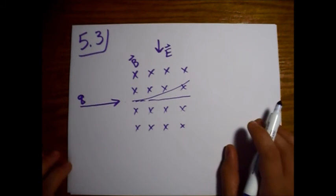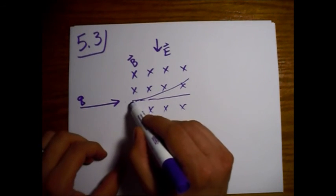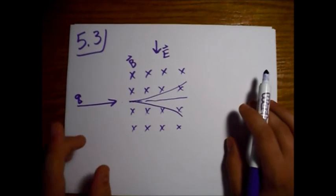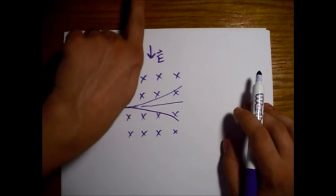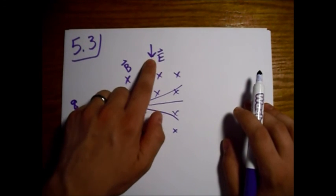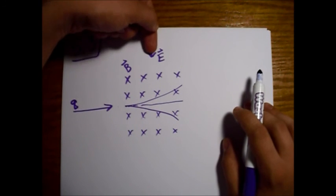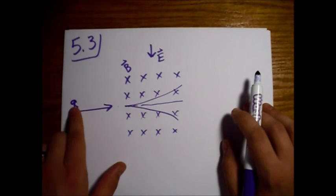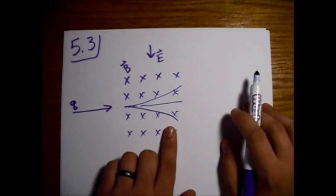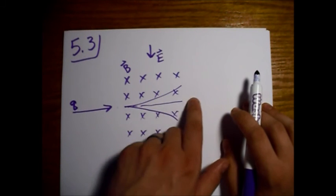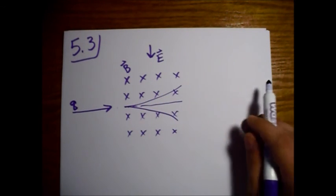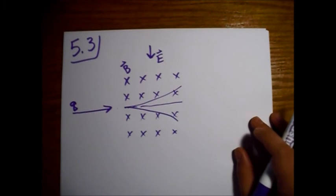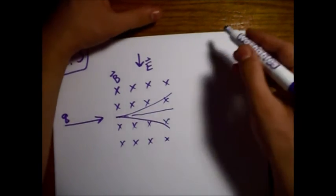For electrons, the beam isn't going to want to curve down this way. Electrons are going to move opposite to this E field, so an E field in this direction will still force the electron — if Q is negative — back up to this neutral position. In order to solve for the original speed, we're just going to look at the Lorentz force equation.